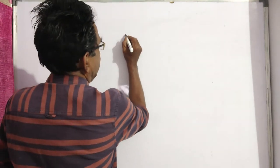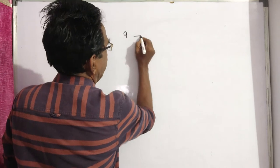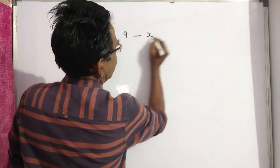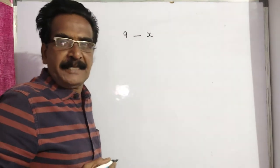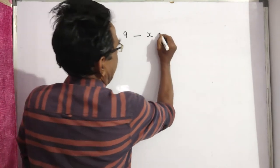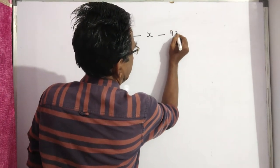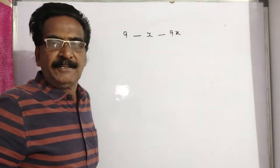the average expenditure of all the 9 members, say x. Then the total expenditure becomes 9 into x, 9x.